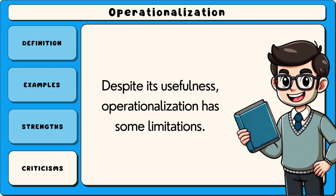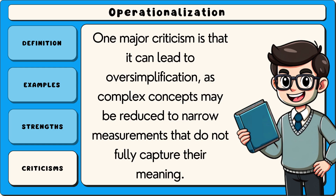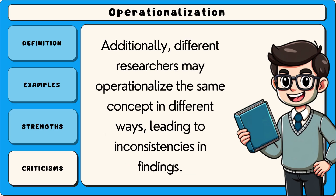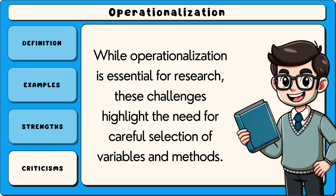Now let's examine some criticisms of operationalisation. Despite its usefulness, operationalisation has some limitations. One major criticism is that it can lead to oversimplification, as complex concepts may be reduced to narrow measurements that do not fully capture their meaning. Another issue is measurement bias, where the chosen indicators may not accurately represent the concept being studied. Additionally, different researchers may operationalise the same concept in different ways, leading to inconsistencies in findings. While operationalisation is essential for research, these challenges highlight the need for careful selection of variables and methods.